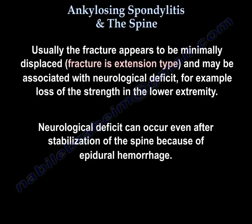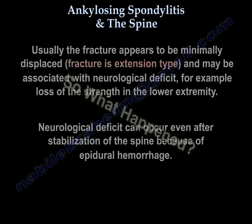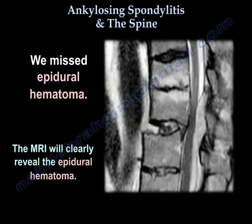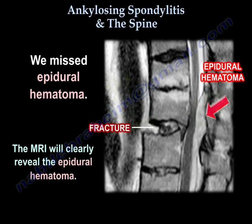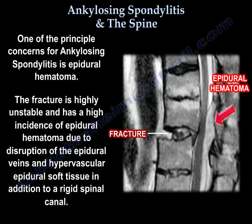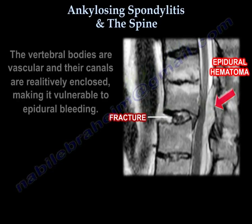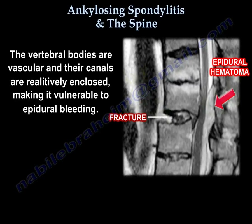Neurological deficit can occur even after stabilization of the spine because of epidural hemorrhage — we may have missed an epidural hematoma. The MRI will clearly reveal the epidural hematoma. One of the principal concerns in ankylosing spondylitis is epidural hematoma. The fracture is highly unstable and has a high incidence of epidural hematoma due to disruption of the epidural veins and hypervascular epidural soft tissue, in addition to a rigid spinal canal. The vertebral bodies are vascular and their canals are relatively enclosed, making them vulnerable to epidural bleeding.